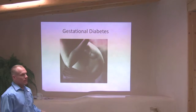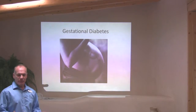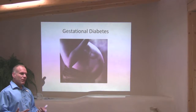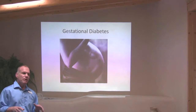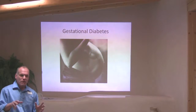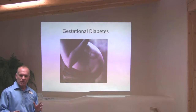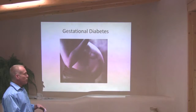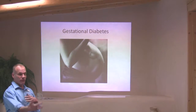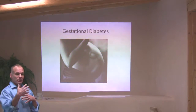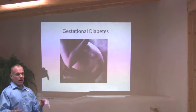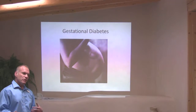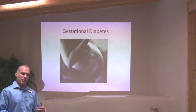Gestational diabetes is the type that happens when you're pregnant. It's generally people who are about to get type 2 diabetes or already on the cusp. Being pregnant knocks them over the edge. They deliver the child, it often reverses — but then a couple of years later, they develop diabetes anyway.